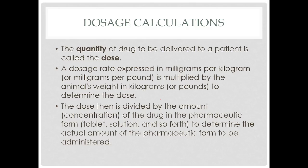So we have a dosage rate. So say we want to give a dose to an animal. The dosage rate is 30 mg per pound. The animal is 10 pounds. So we have 30 mg per pound. We want to multiply it by 10 pounds. So what is the dose in milligrams for this animal?